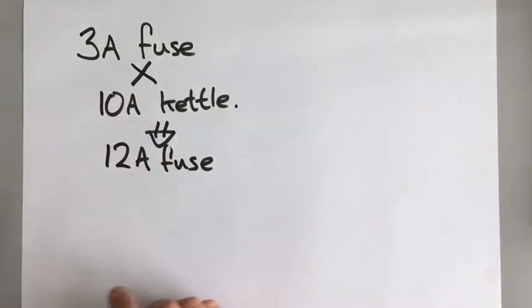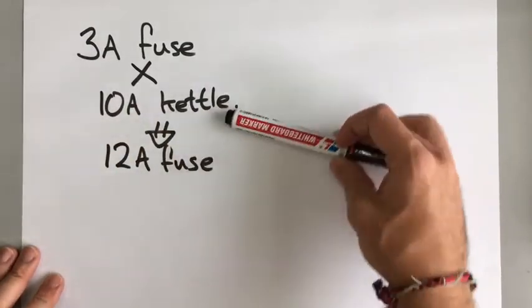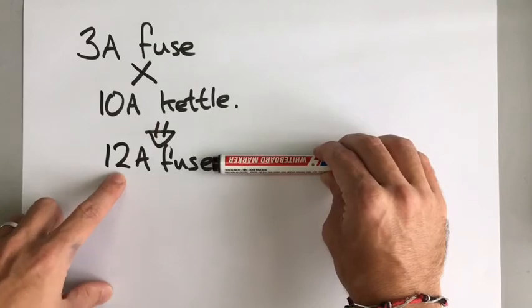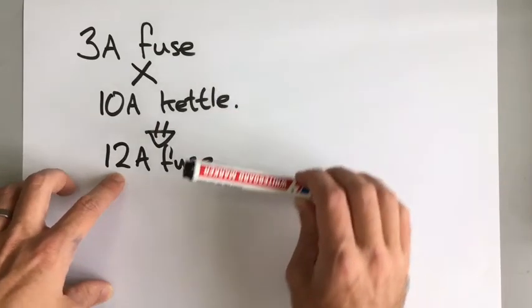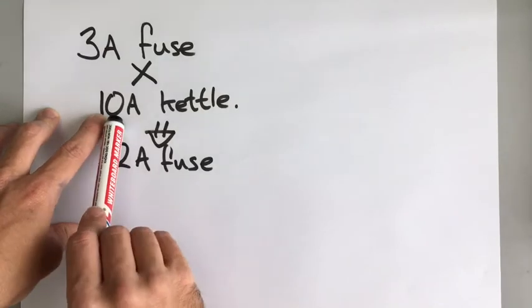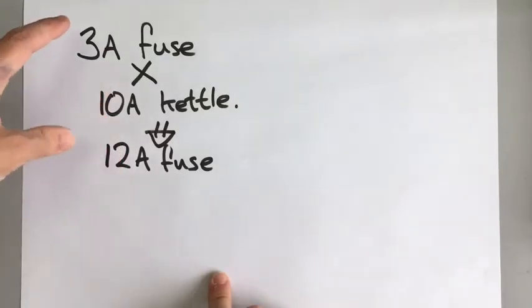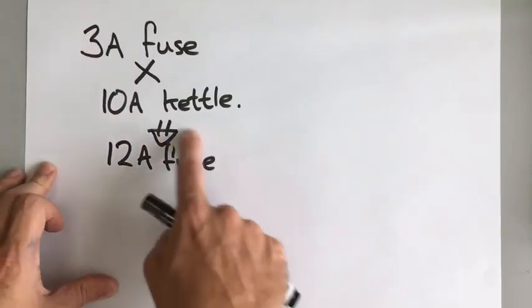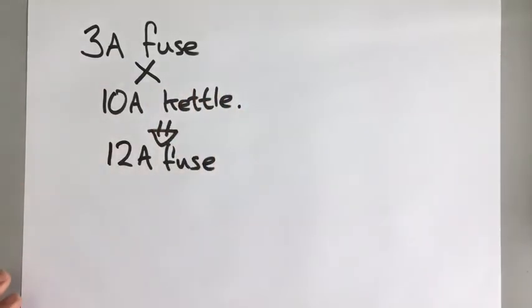So if you're asked to choose a type of fuse for a certain appliance always choose the fuse that is one rating higher or the same rating as the kettle. So if you had a 10 amp fuse you could use that here but you wouldn't want to use a 9 amp fuse. If you only had a 3 amp fuse, a 6 amp fuse and a 12 amp fuse you would want to use the 12 amp fuse for your kettle. So that's how you choose fuses.